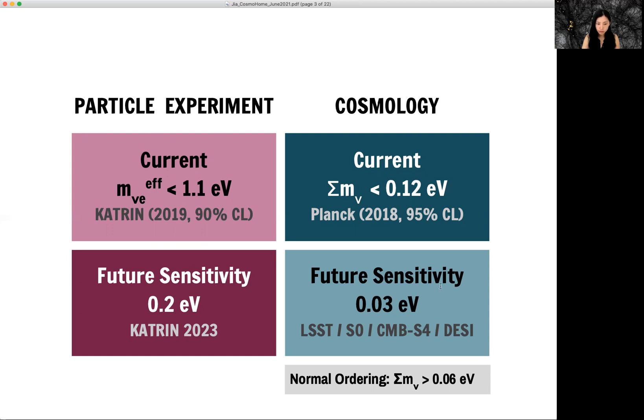For cosmology, the future sensitivity is expected to reach around 0.03 EV combining via Rubin Observatory LSST, Simon's Observatory, which is a CMB experiment, CMBS4, and DESE.